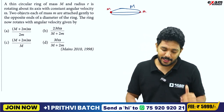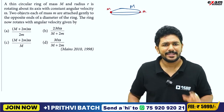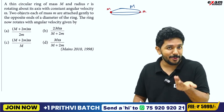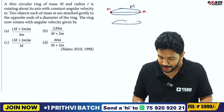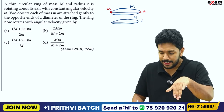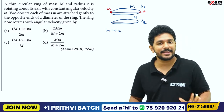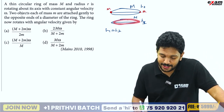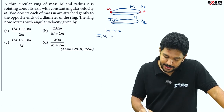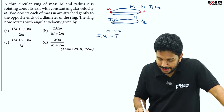First of all, if we attach objects gently, there is no external torque applied. So angular momentum is conserved: I₁ω₁ equals I₂ω₂. The mass of the system changes, so I₂ and ω₂ will give us I₂ω₂. The moment of inertia will change.